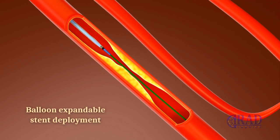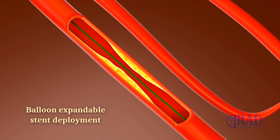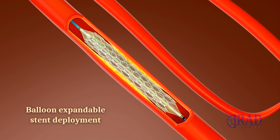Balloon angioplasty with stenting: depending on the resistance and location of the disease segment, the vessel may first be treated with a smaller balloon angioplasty, followed by the deployment of a balloon-expandable conventional or drug-eluting stent for improved patency and accurate placement.